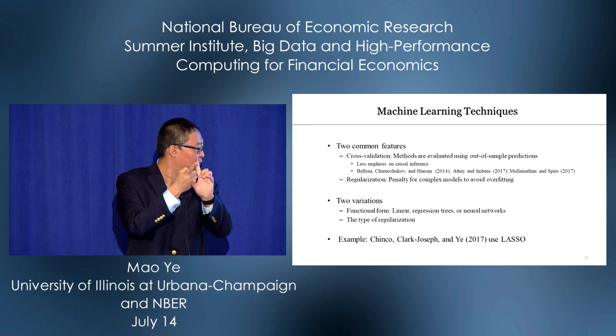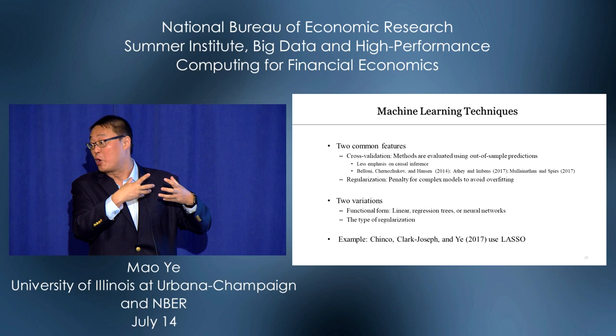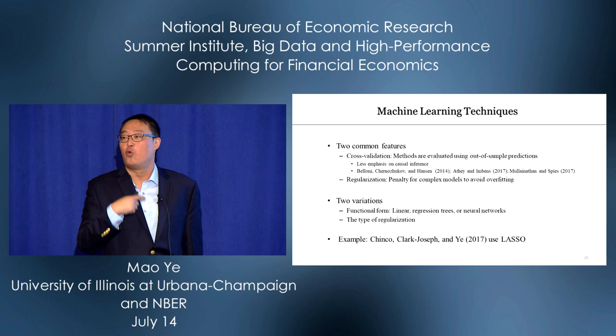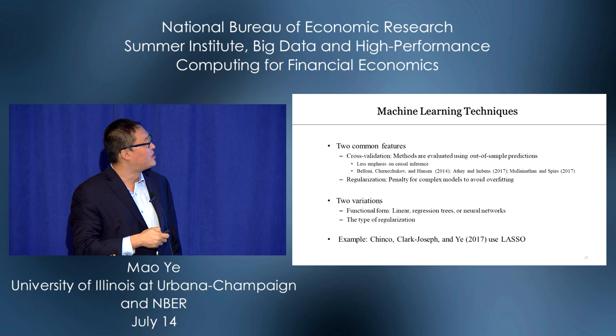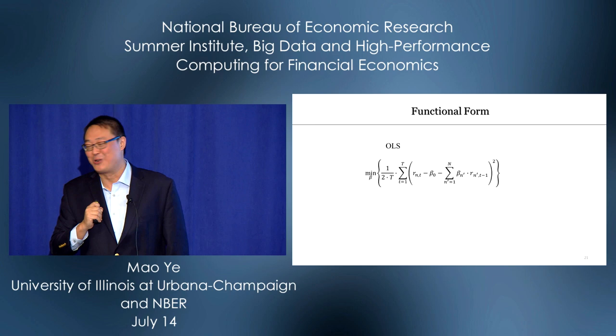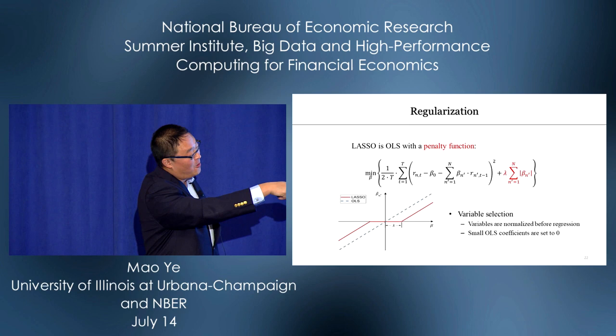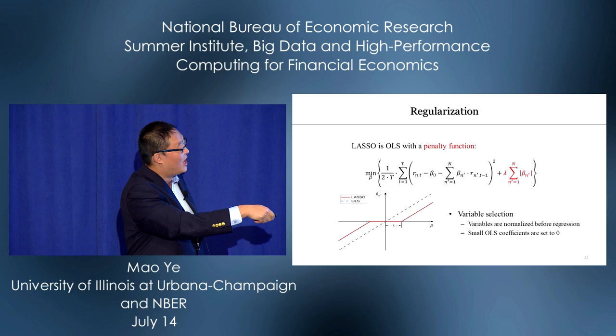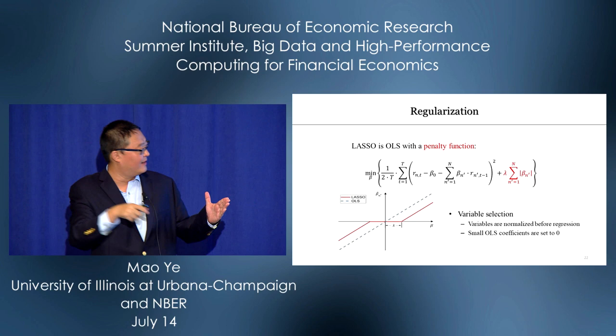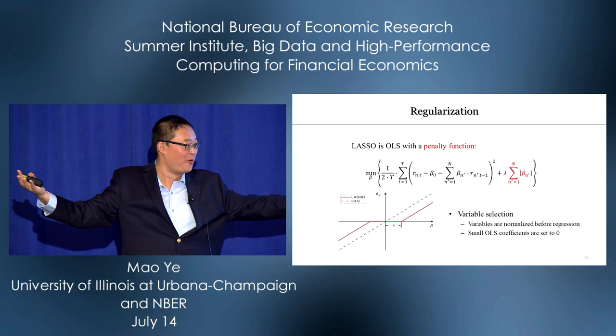There are two dimensions of variation across machine learning techniques: functional form (linear, regression trees, or neural networks) and the type of regularization. In our paper with Alex Hinkle, we use LASSO. LASSO has a linear functional form like OLS, but adds an L1 penalty term on beta. If a beta is small after normalizing variables, LASSO sets it to zero — effectively ignoring that predictor. If beta is large, LASSO shrinks it.